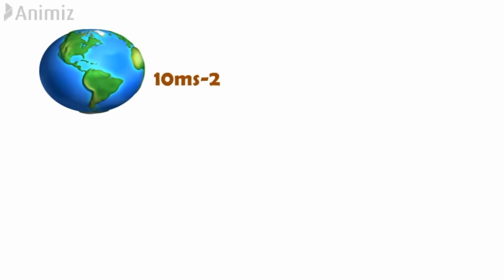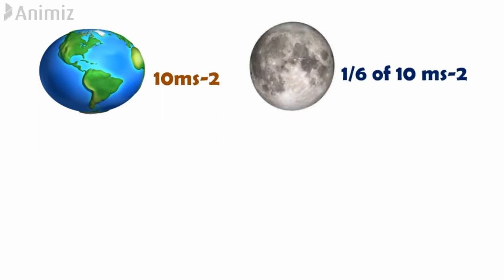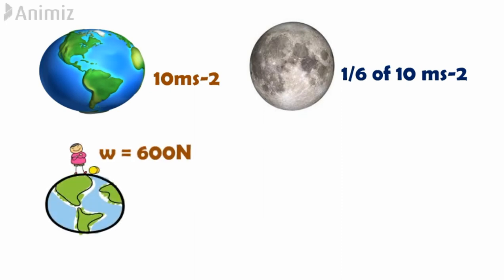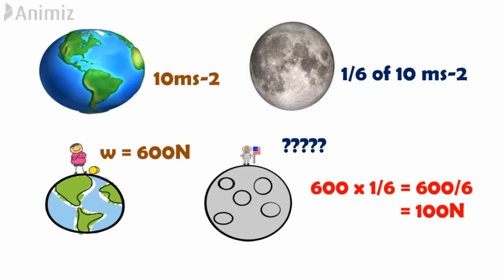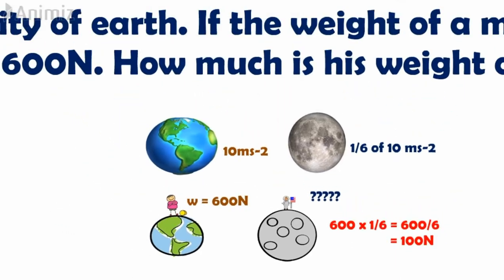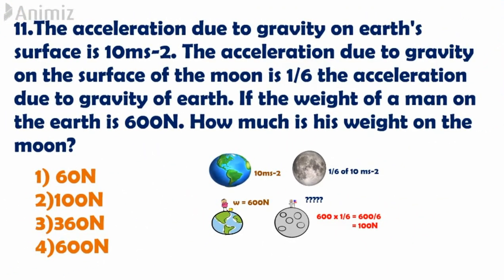The acceleration due to gravity on Earth's surface is 10 m/s². On the Moon it is 1/6 of Earth's, which means 1/6 of 10 m/s². If a man on Earth weighs 600 Newton, we need to find his weight on the Moon. Since acceleration on the Moon is 1/6 of Earth's, the weight on the Moon equals the weight on Earth multiplied by 1/6, giving 100 Newton. Therefore the answer is 100 Newton.